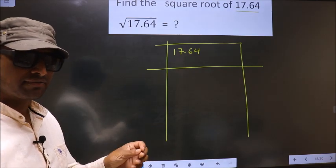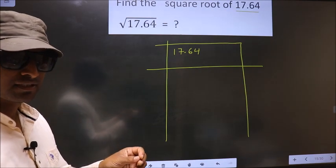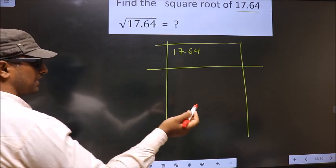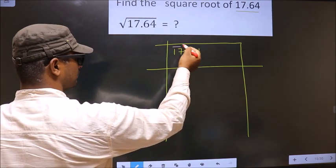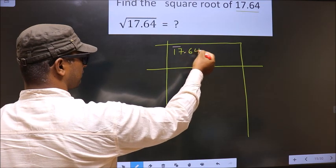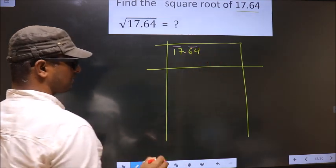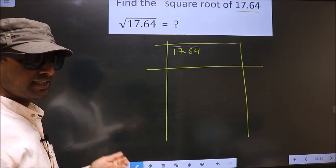Now we should divide the given number into pairs before the decimal and after the decimal. So before the decimal, these two numbers, one pair. After the decimal, these two numbers, another pair. Okay, next.